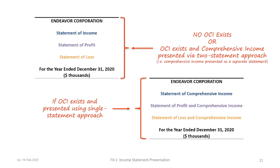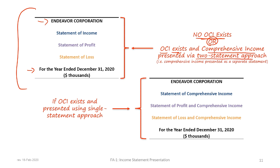We will now illustrate the preparation of a single-step IFRS statement of comprehensive income. Under IFRS, coming up with a title is more complicated than under ASPE — we have options depending on whether OCI exists and how we want to present the statement. If OCI does not exist, or if OCI exists but we want to present using a two-statement approach, we can use titles such as 'Statement of Income,' 'Statement of Profit,' or 'Statement of Loss.'